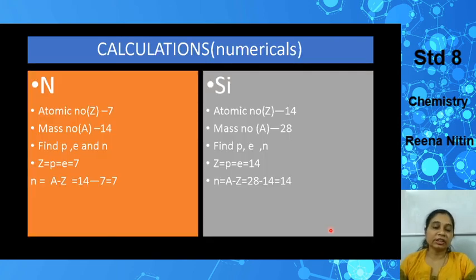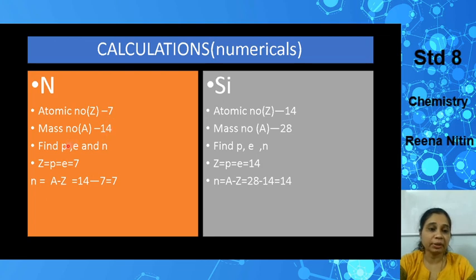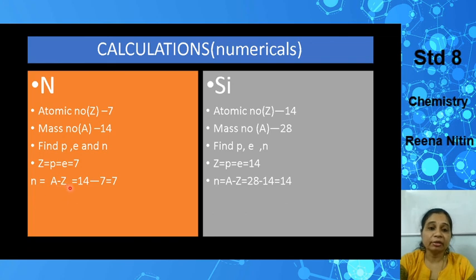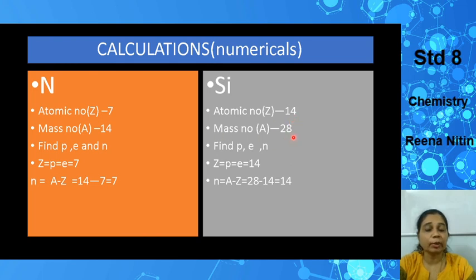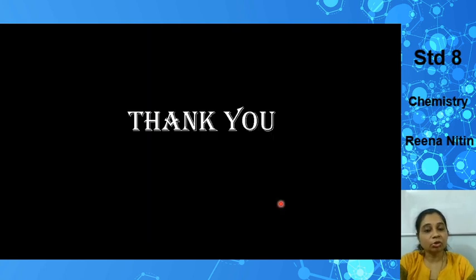These are the types of numericals that can appear in your exams. For nitrogen: atomic number Z = 7, mass number A = 14. So P = 7, E = 7, and N = A − Z = 14 − 7 = 7. For silicon: atomic number is 14 (find it from the mnemonic if not given), mass number = 28. So P = 14, E = 14, and N = 28 − 14 = 14. That's all for today — I hope you found the session helpful. See you again soon, thank you, bye!